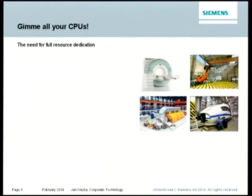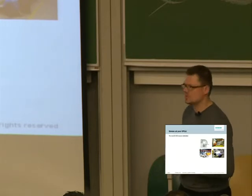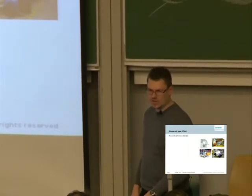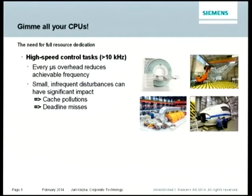There are several use cases where, in a multicore system, you want full use of a certain number of cores — where you want to run a task at 100% on a core without being disturbed. The first thing that comes to mind is some kind of high-speed control system, where you talk to hardware and react to events at a high rate with low latency. Every microsecond counts to achieve a higher frequency, and every latency in the software stack lowers your achievable maximum control rate. We want to keep caches hot and avoid disturbances from other operating system activities.